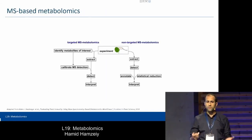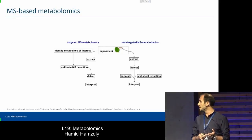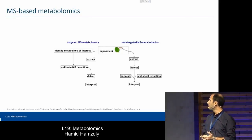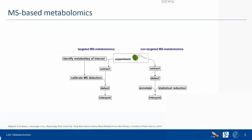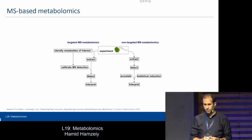There are two types of metabolomics you can do: targeted and non-targeted. In targeted, similar to proteomics, you're interested in a specific set of metabolites and that's what you try to detect. In untargeted, similar to proteomics, we really want to get the entire picture.